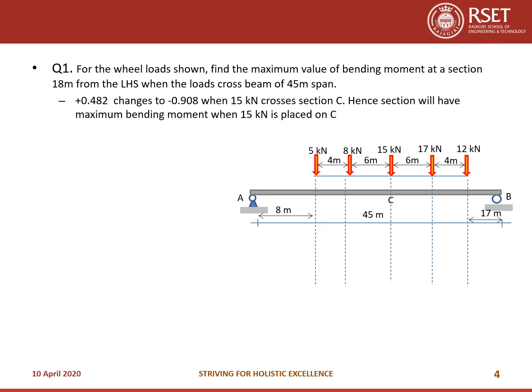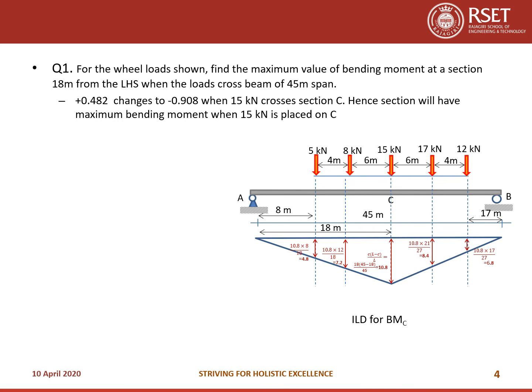The 15 kN load is now placed on C. The total AC was 18 meters. From 18 meters, the 5 kN load will be at a distance of 8 meters from A. Similarly, the 12 kN load from B will be at a distance of 17 meters. Now let us draw the influence line diagram for the bending moment at section C.